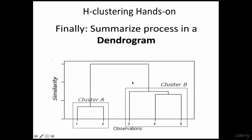To summarize: initially, 1 and 2 were closest to each other based on the distance formula, and the distance between 1 and 2 is shown on the y-axis of the dendrogram. Then we merged 4 and 5 into a cluster, with the distance between 4 and 5 shown by that line. Then we found the distance between record 3 and Cluster B by looking at the nearest neighbor, which was 5. The distance between Cluster A and Cluster B is the complete top value.